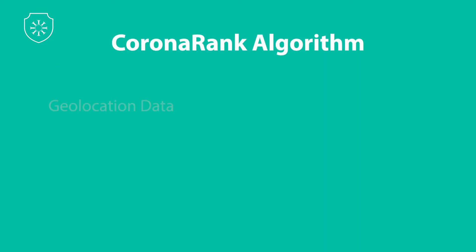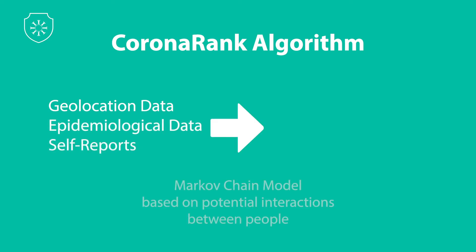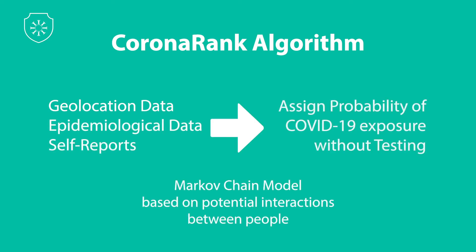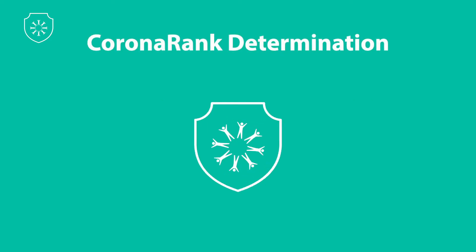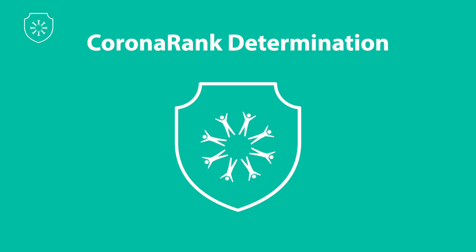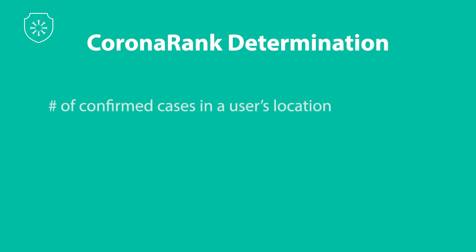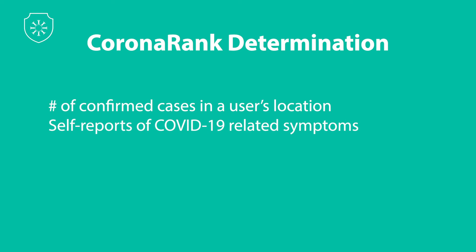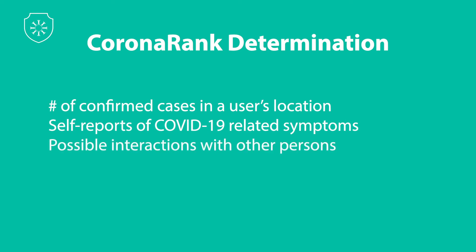CoronaRank is an algorithm that uses geolocation data, epidemiological data, self-reporting, and Markov chain modeling to assess the likelihood of coronavirus exposure. An individual's CoronaRank is the likelihood that they may be infected with COVID-19. Confirmed cases are assigned a CoronaRank of 1. For everyone else, CoronaRank is determined by the number of confirmed cases in a user's location, self-reports of COVID-19-related symptoms, and possible interactions with others based on geolocation data from the past two weeks.